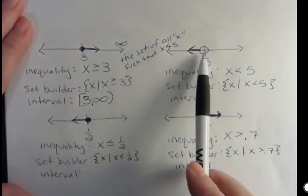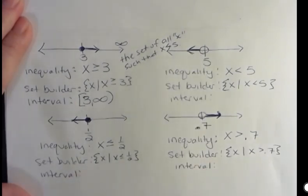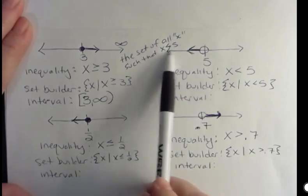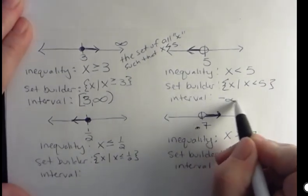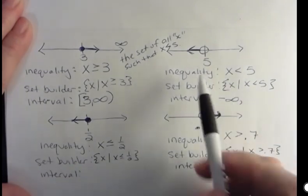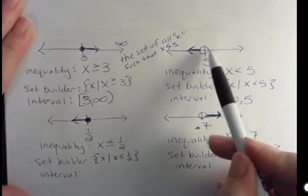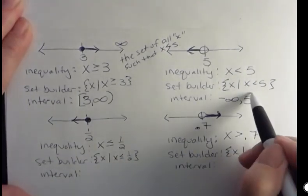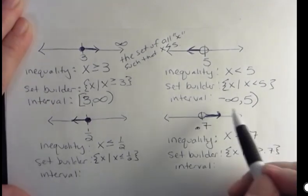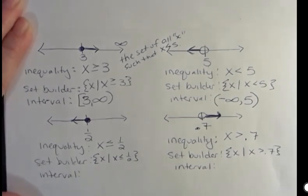For this one, we always talk about what's happening on the left end and then on the right end. The left end of this is going forever to the left. So we have negative infinity on the left, and we're stopping at 5. But the question is, do we include 5? Does it have the equal-to part? No. So that's going to be a parentheses. And infinity, no matter which one, is always a parentheses — it's never a bracket. So that would be the interval notation for that one.